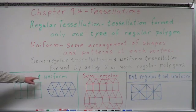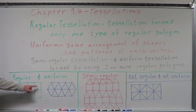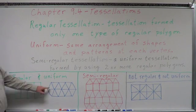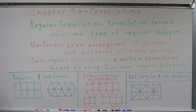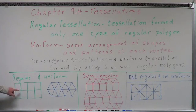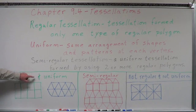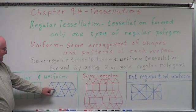Here are examples of regular and uniform tessellations. Regular, using just squares — look down at the floor. Here's a regular tessellation using equilateral triangles. They're also uniform. Why? Because at every vertex, what do you have? You have four squares — four squares at every corner.